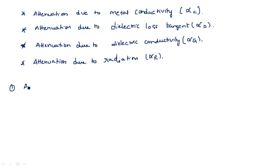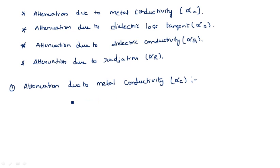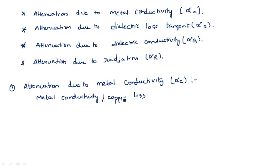Now let us see each one. The first one is attenuation due to metal conductivity, alpha C. Metal conductivity loss is also called copper loss or metal conductivity loss.